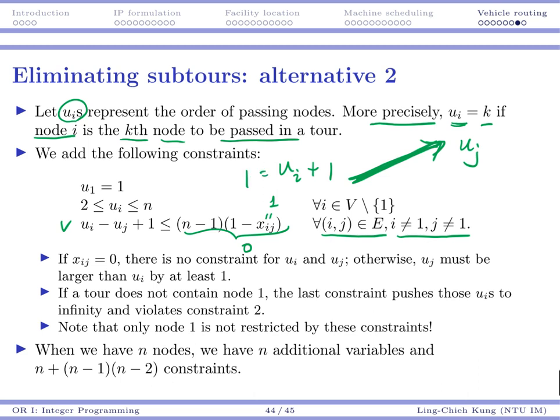So if ui is 1, then this guy would become 2. Somehow it points to somewhere. So this guy becomes 3, this guy becomes 4, this guy becomes 5. Let's say this is the place for you to go back to your original point. So you have 5 nodes, and that's why all your ui are numbers between 1, 2, 3, 4, and 5.